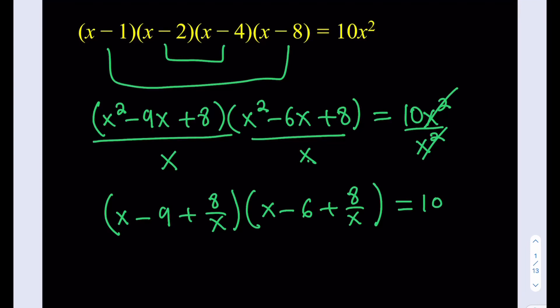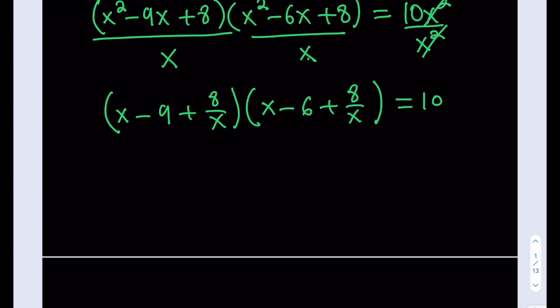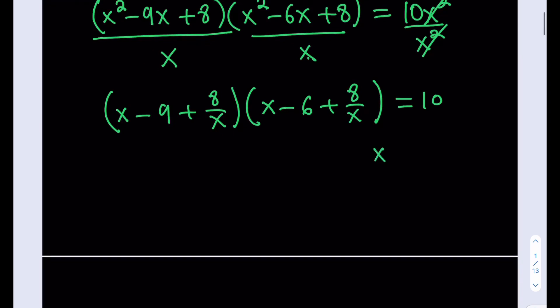Okay, now obviously there's a reason why we do this, because after doing this, we're actually going to be able to use substitution. Because notice that we have the x here and then 8 over x here. So x plus 8 over x is something we can substitute, because that repeats and everything else is a constant. So at this point, I have very many choices, but I'm just going to go with one of these.